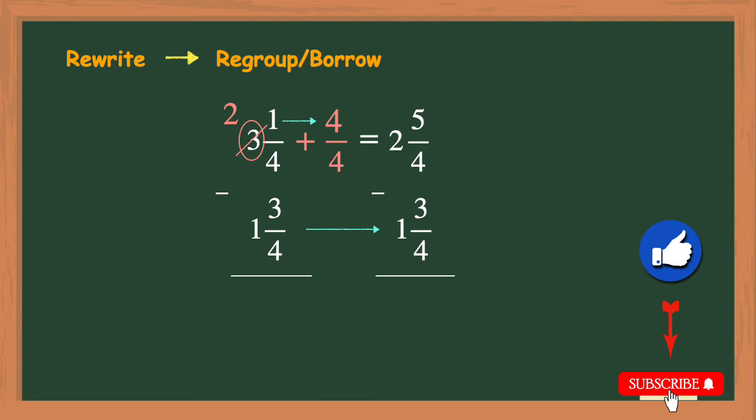All right now I will use this equivalent mixed number of 2 and 5 fourths to subtract. I need to subtract the numerators of the fractions first so 5 minus 3 is 2 and we will keep the denominator of 4 the same to give me the fraction of 2 fourths.